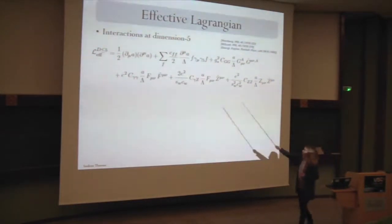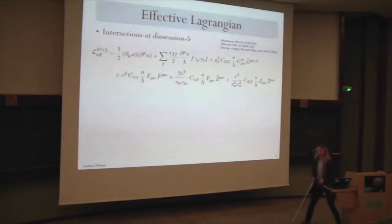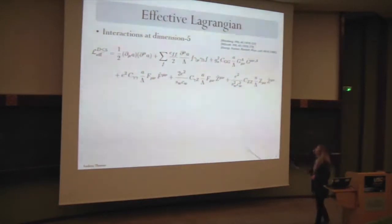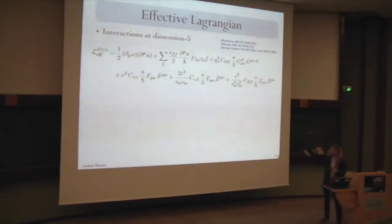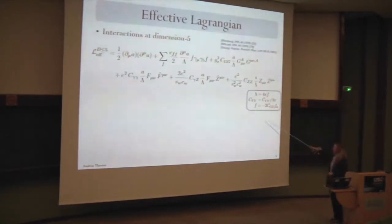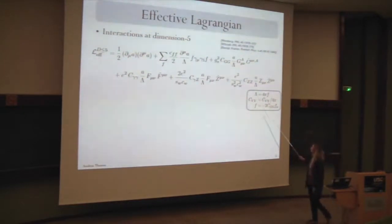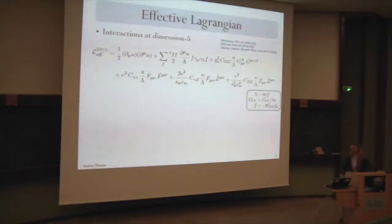Here's my effective Lagrangian. A is the ALP — we have a kinetic term, technically also a mass term that breaks the shift symmetry explicitly, and then A couples to two fermions, two gluons, two photons, and to the Z. We chose a relatively unusual normalization with this lambda, which is a heavy scale related to the ALP decay constant. The relation is lambda equals four pi f, and these couplings are also suppressed by a factor of four pi.